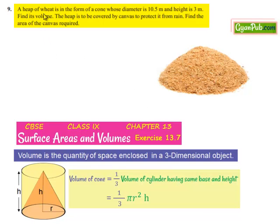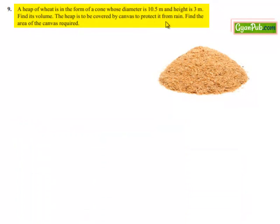Moving on to question 9. A heap of wheat is in the form of a cone whose diameter is 10.5 meters and height is 3 meters. Find its volume. The heap is to be covered by canvas to protect it from rain. Find the area of canvas required.